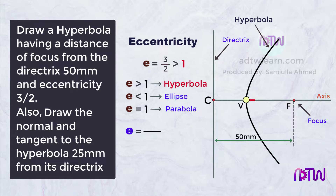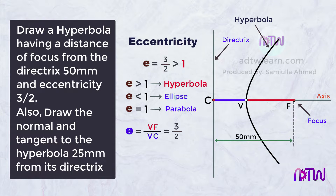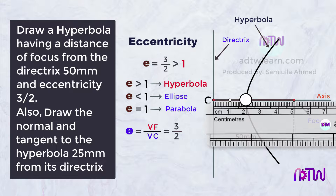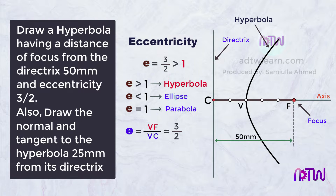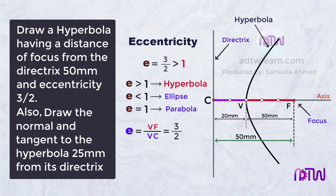Eccentricity is the ratio of the length VF to VC. The eccentricity is given as 3/2. If we divide this distance into 5 equal parts, the length VF will be 3 parts and VC will be 2 parts. That means this V point is 30mm from the focus point, or 20mm from the directrix. Since we understood this, let's start drawing.